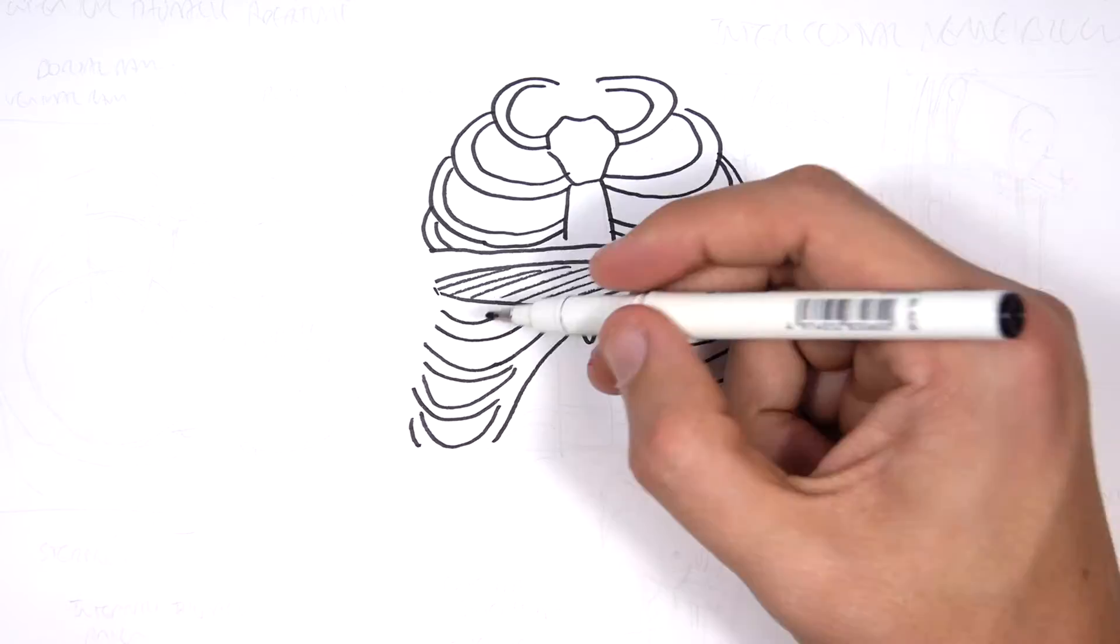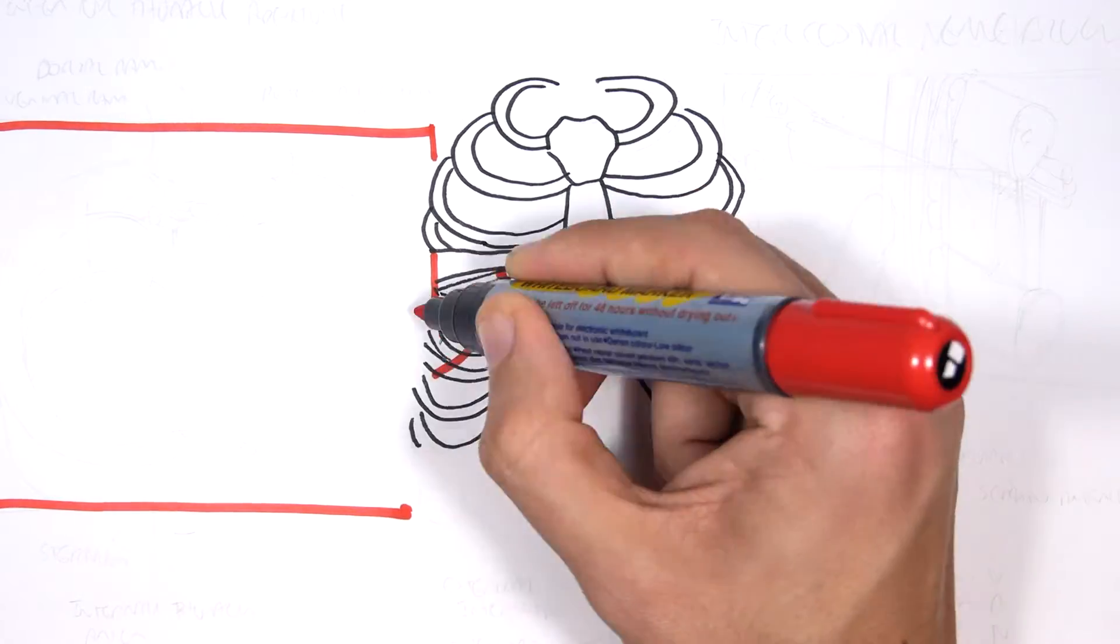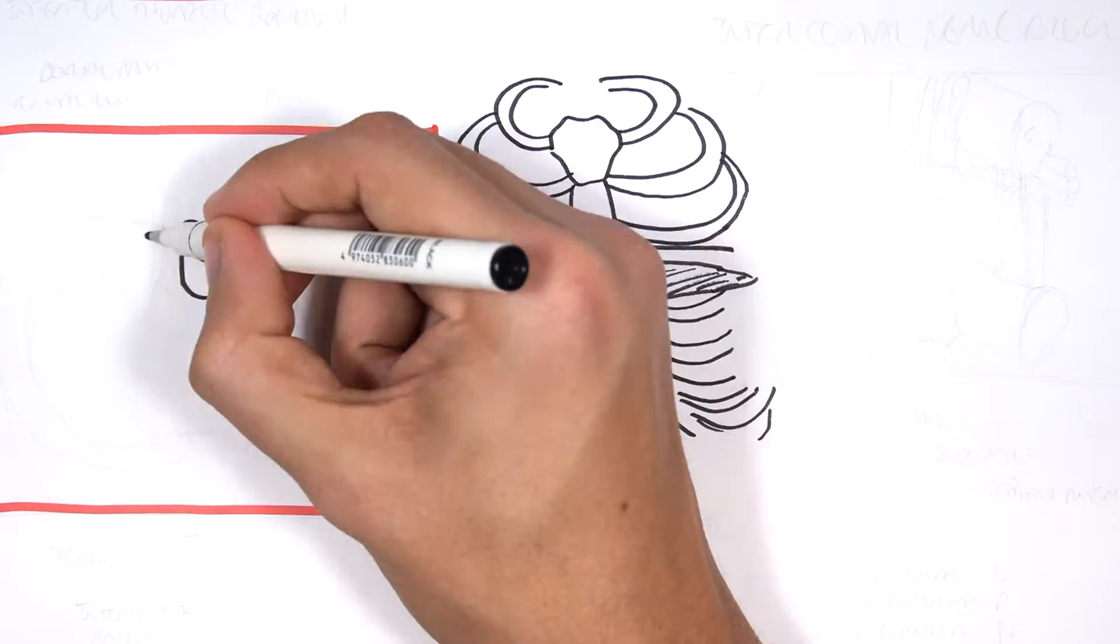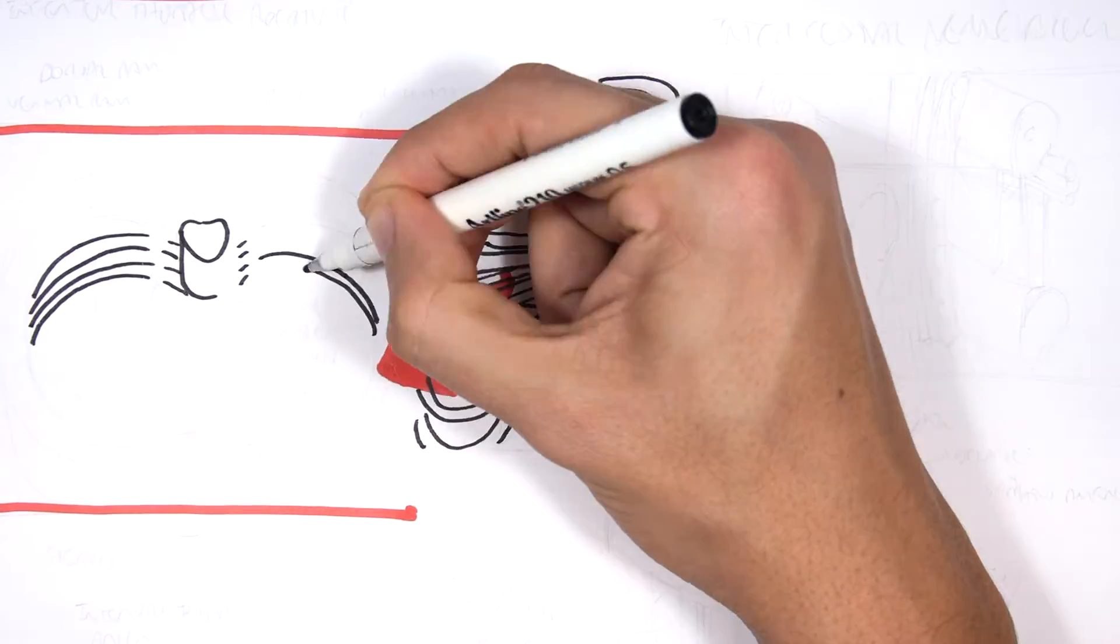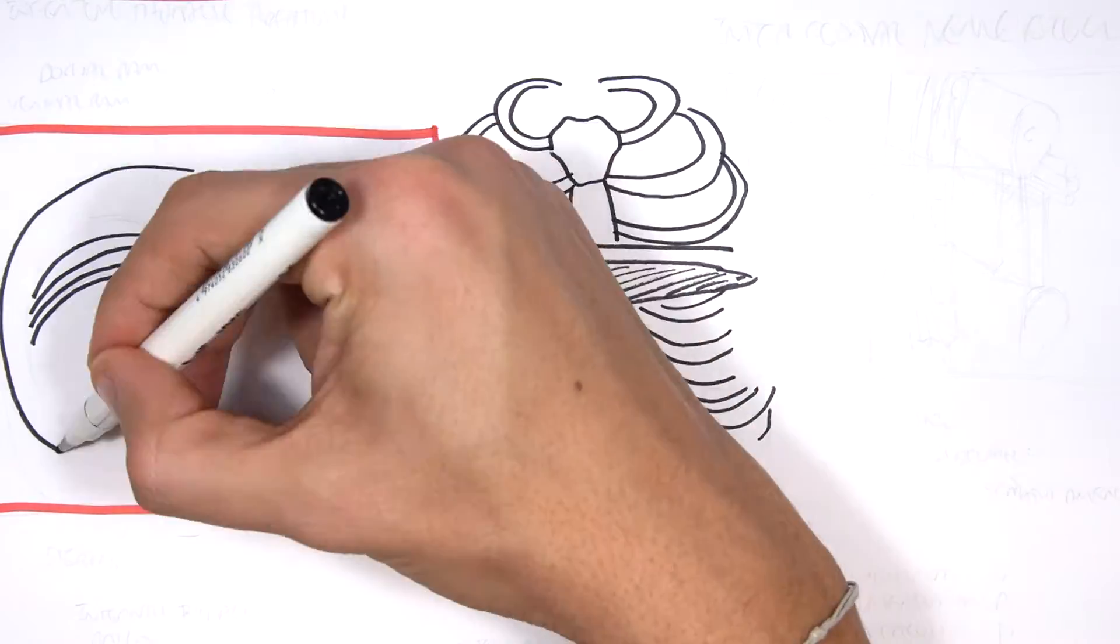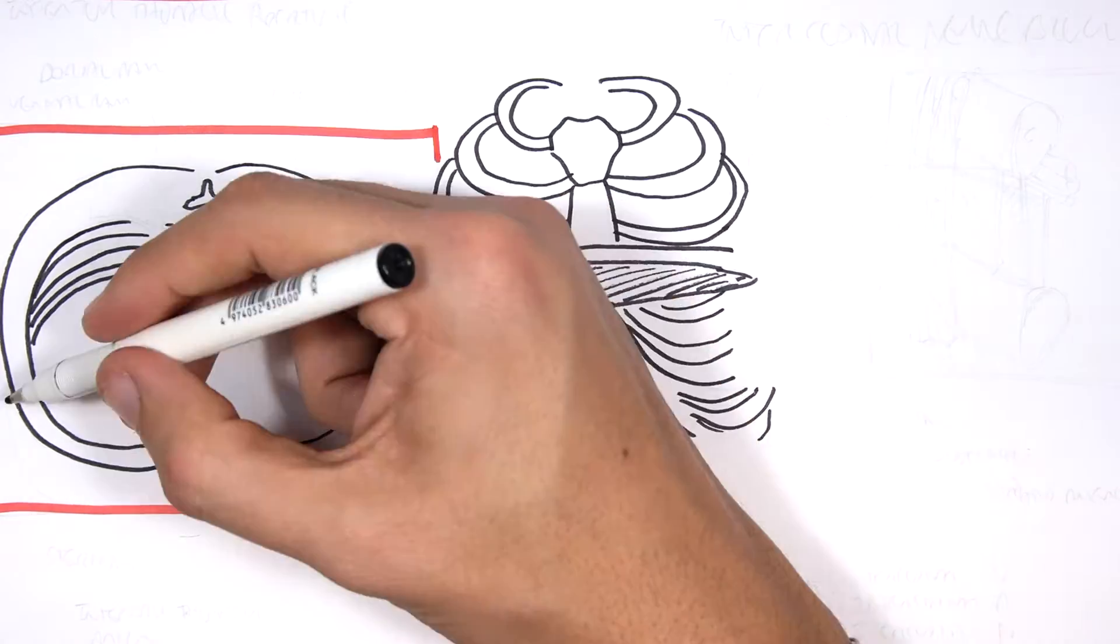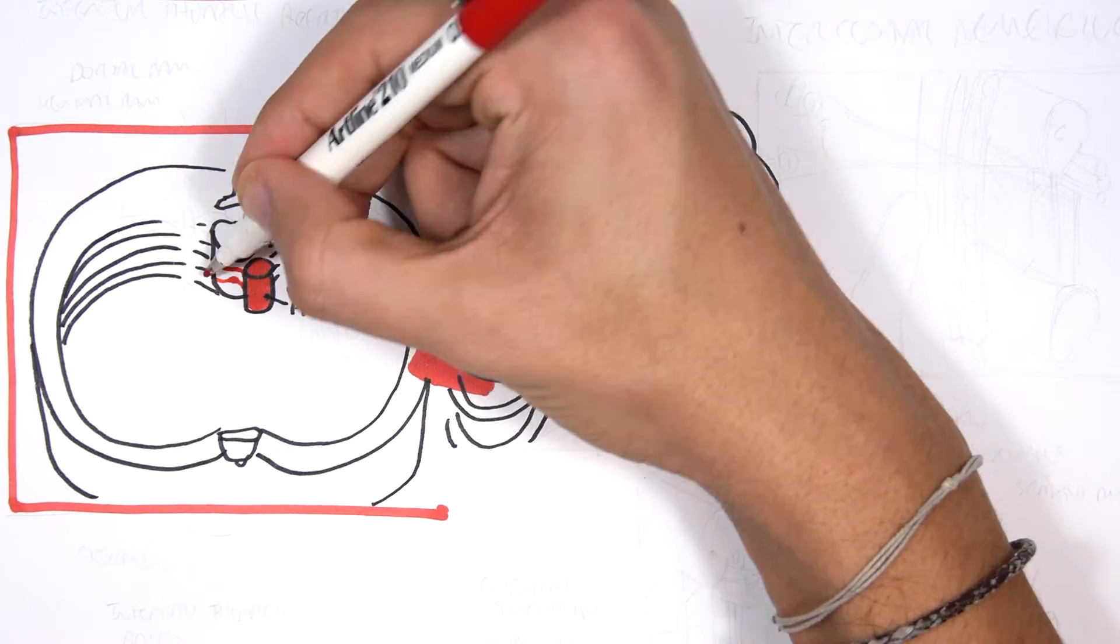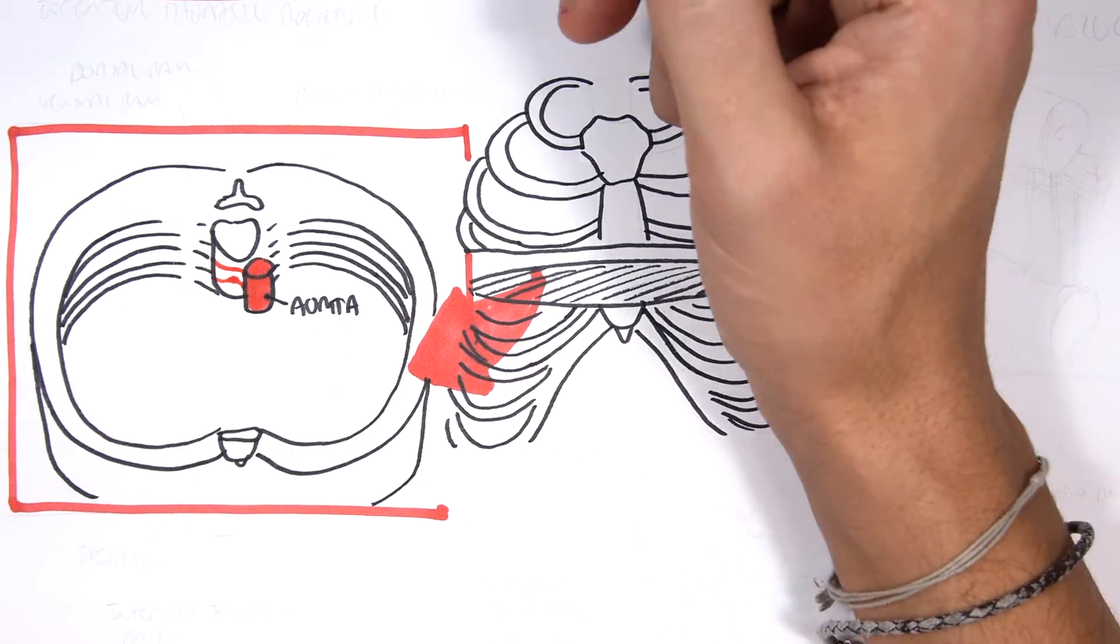So here we have the anterior view of the thorax. Let's cut through here, cross section, and look at what important structures we can find. So here we have, we're looking superiorly on the slice we just cut. And here we can find the thoracic aorta, which gives off arteries to supply the thoracic region, essentially the ribs and stuff.